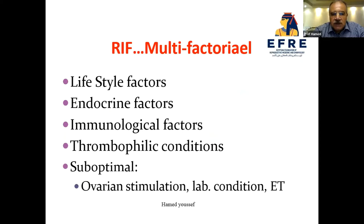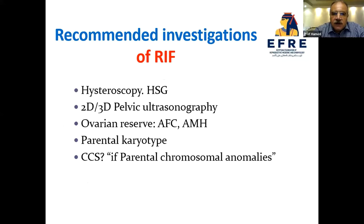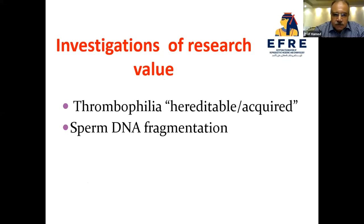Additional multifactorial causes include suboptimal ovarian stimulation, lab conditions, and the embryo transfer process itself. The recommended investigations for RIF nowadays include hysteroscopy for the cavity, hystero-salpingogram for the tube, 3D and 2D ultrasound for the pelvis, ovarian reserve testing, parental karyotyping, and if karyotyping is abnormal, comprehensive chromosomal screening. Investigations of research value include thrombophilia testing and sperm DNA fragmentation.